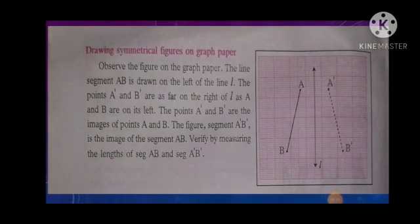Now children, our next concept is drawing symmetrical figures on graph paper. Observe the figure on the graph paper. The line segment AB is drawn on the left of the line L. The points A' and B' are as far on the right of L as A and B are on its left. The points A' and B' are the images of points A and B.